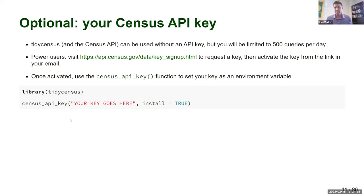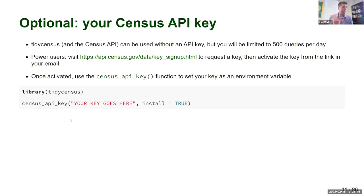An optional but recommended step is to set a census API key. As of tidycensus version 1.3, tidycensus can access the census API without an API key, but you're then limited to 500 queries per day. If you're looking to become a power user, you'll want to get an API key. You can follow the link in the slides and pass it to a function in tidycensus called census_api_key that will install and optionally store the key for future usage. Good practice, not required for today if you're just getting started.